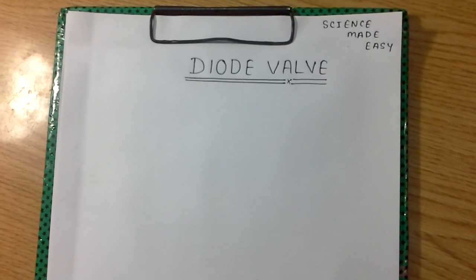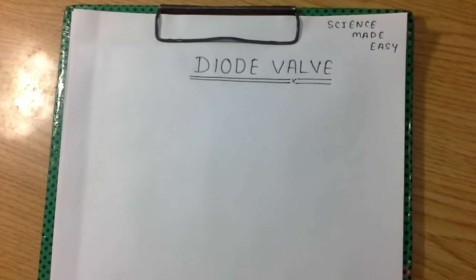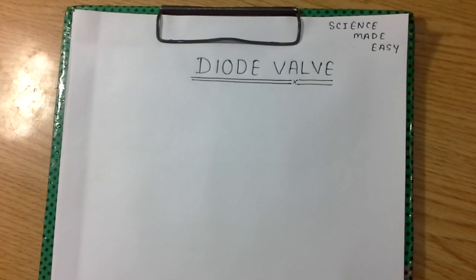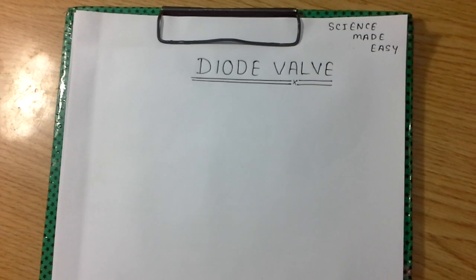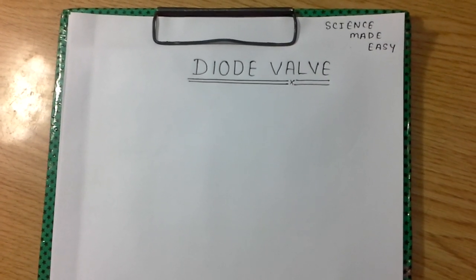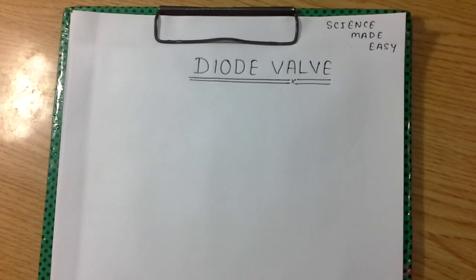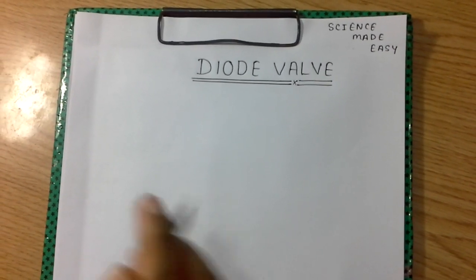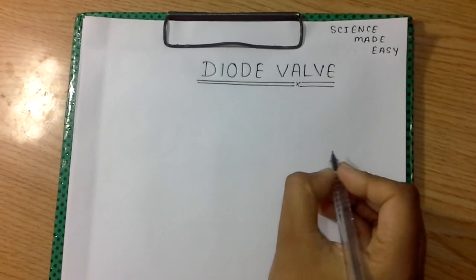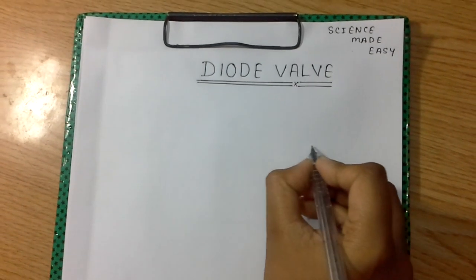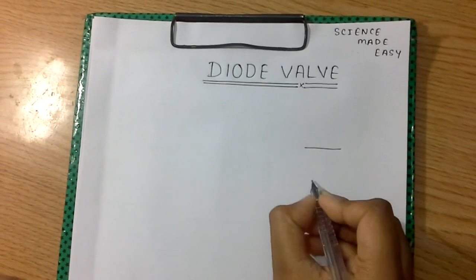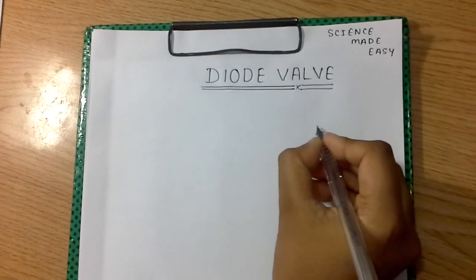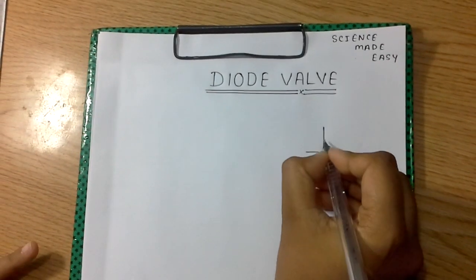Hello friends, welcome to Science Made Easy. Our today's topic is the diode bulb. As we all know, the diode bulb is the simplest electron tube, which consists of two electrodes — one is known as the cathode and the other is known as the anode.